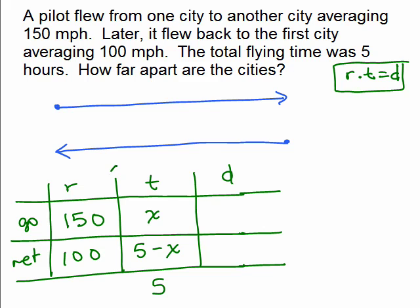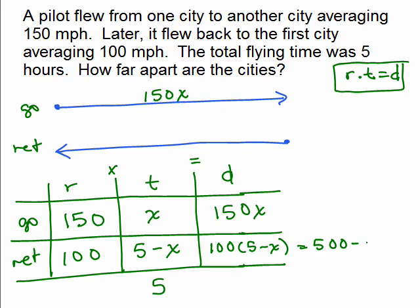Alright, so rate times time equals distance, 150x. So here's going, here's returning. So we know this is going to be 150x, that length. On the return trip, it's 100 times 5 minus x, which is 500 minus 100x. So this is 500 minus 100x.